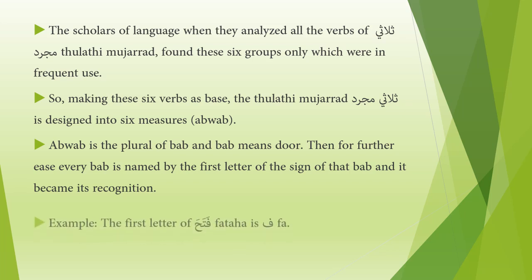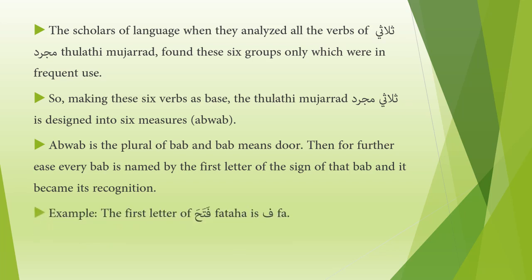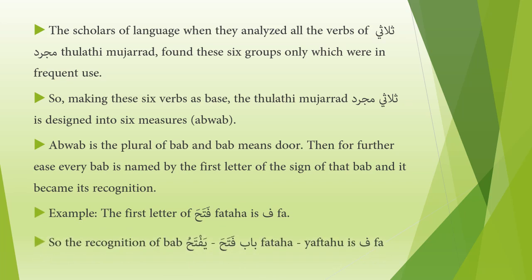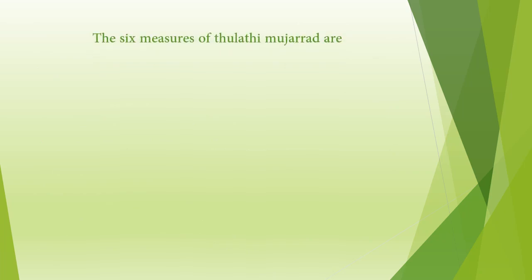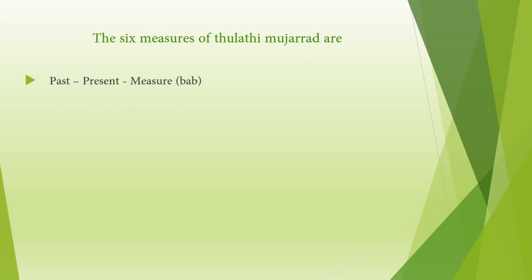Example: the first letter of fataha is fa, so the recognition of bab fataha/yaftahu is fa. The six measures of thulathi mujarrad are listed with their past tense, present tense, and bab name. Number one: fataha/yaftahu, bab fa. Fataha is the past, yaftahu is the present, and the bab is fa.